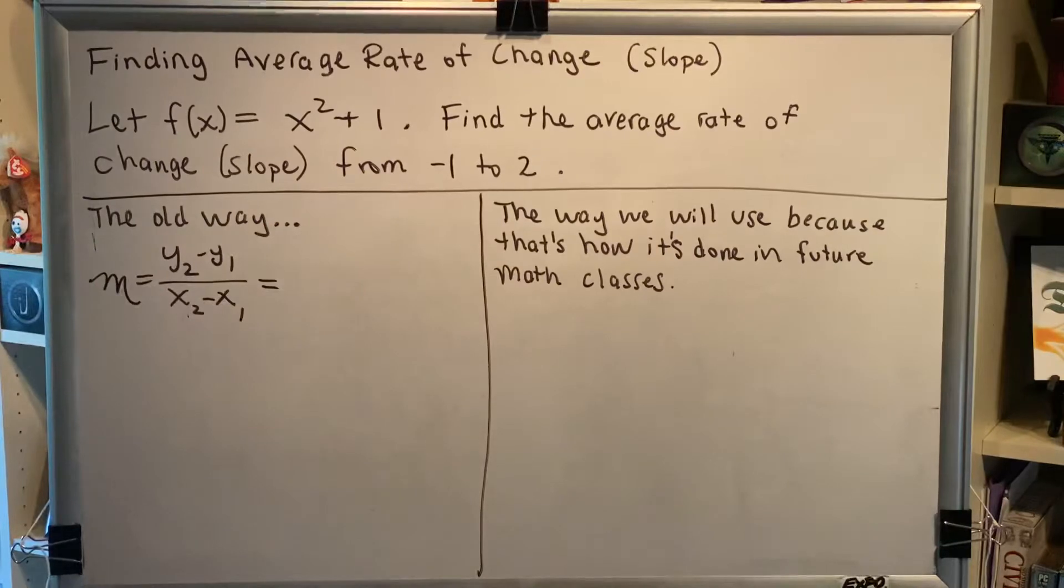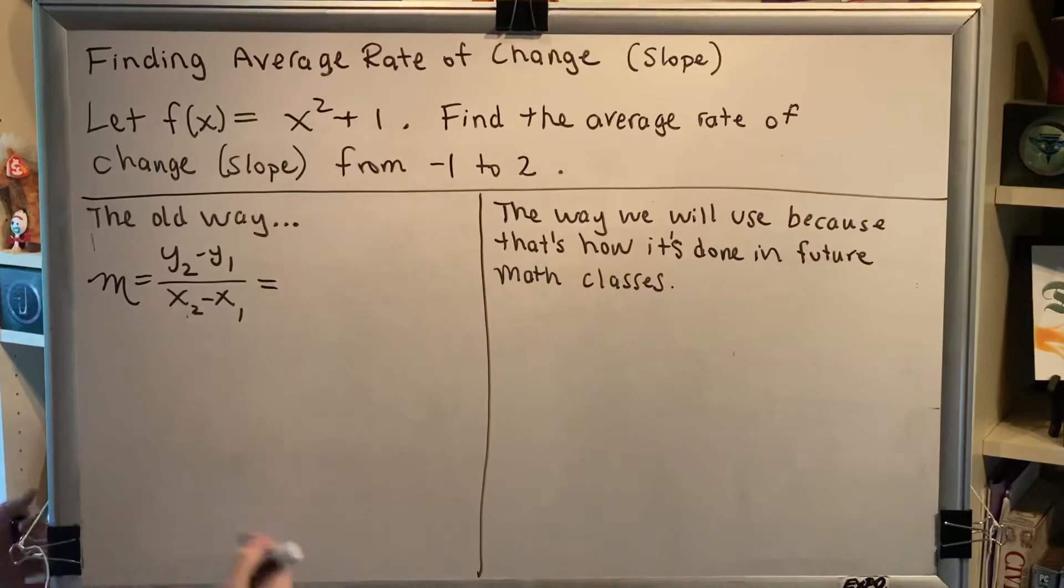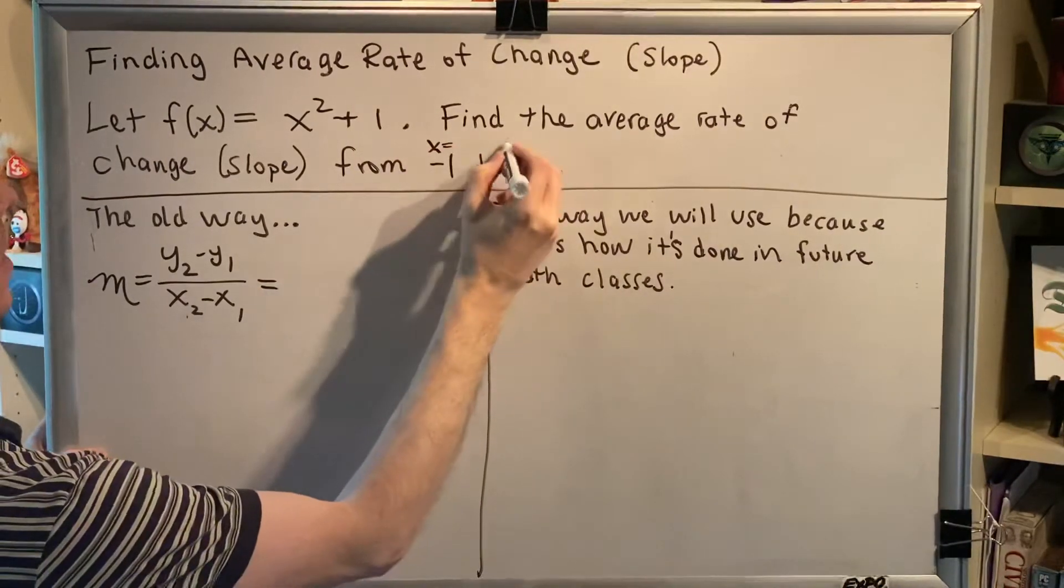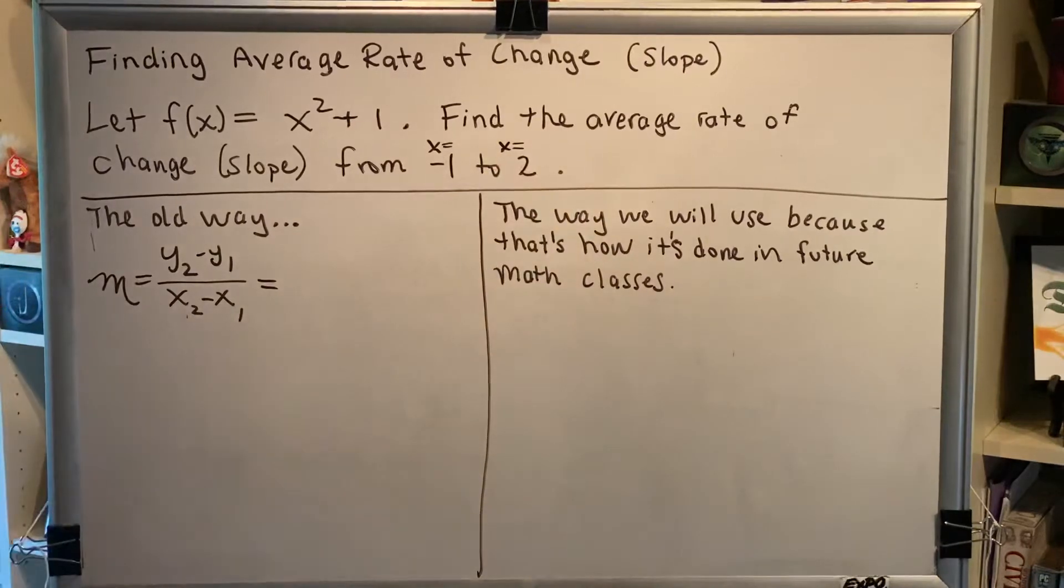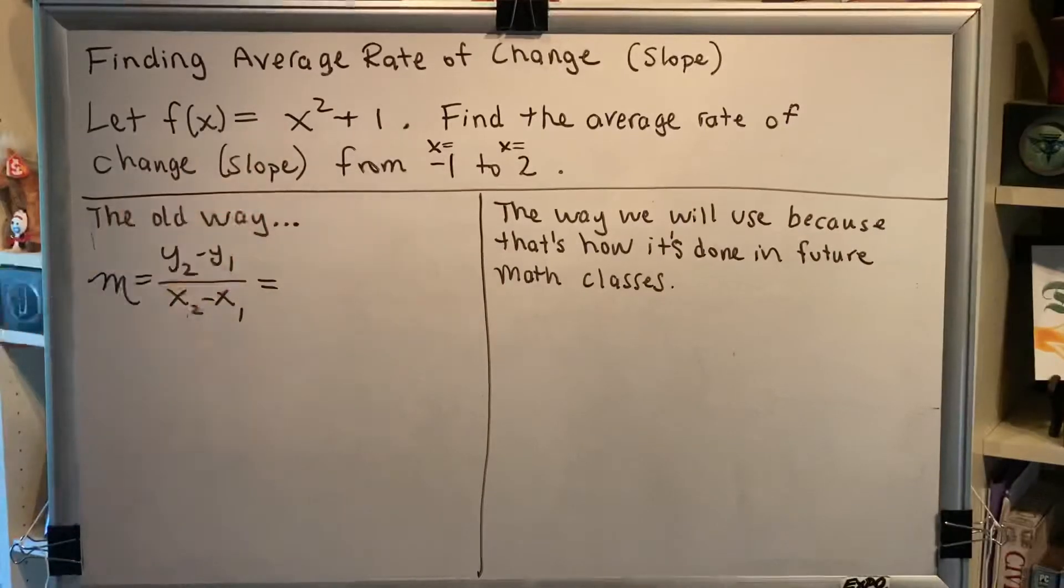So the first thing I want you to understand is that when it says find the average rate of change from number to number is that these are both x values. This is x equals negative 1 and x equals 2. And if you want to find the y values that go with those x's you just have to plug into your formula.